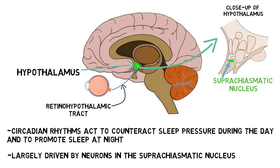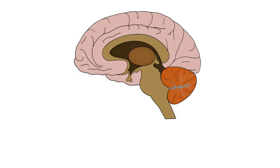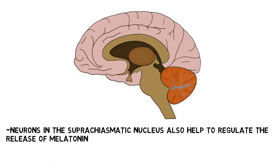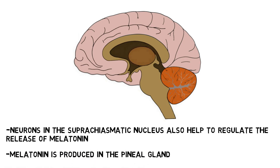Activity in the suprachiasmatic nucleus ultimately regulates the timing of a long list of functions associated with sleep, including body temperature, hormone secretion, and blood pressure. Neurons in the suprachiasmatic nucleus also help to regulate the release of melatonin, a hormone that promotes sleep and is released primarily in darkness. Melatonin is produced in the pineal gland and plays important roles in regulating circadian rhythms by lowering body temperature and increasing tiredness close to bedtime.